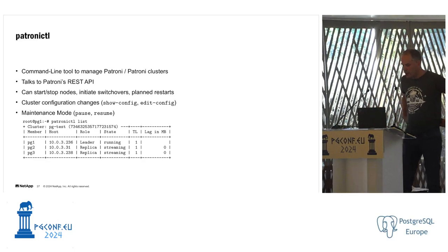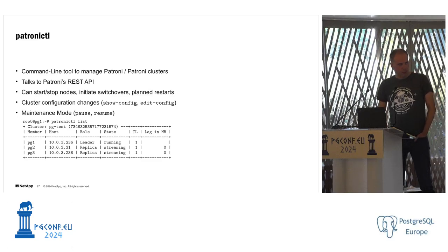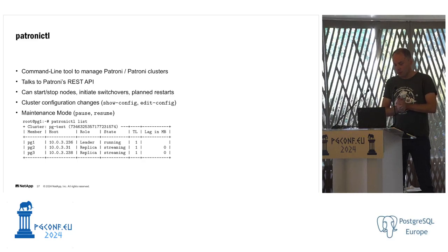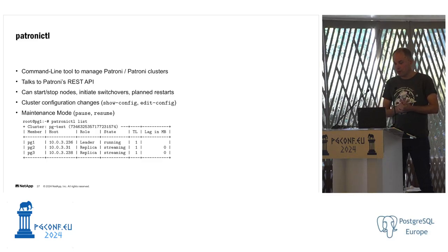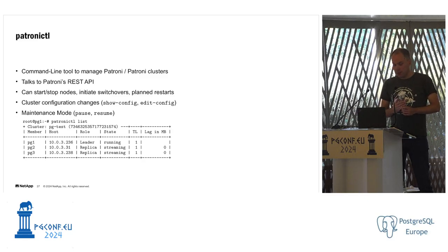Further Patroni features: the Patroni control CLI talks to the REST API. You can use it to initiate switchovers, do planned restarts for minor version upgrades, change dynamic cluster configuration (replicated to all nodes so you only do it once), put the cluster into maintenance mode (pause/resume), and use the 'list' command which shows cluster members, IP addresses, roles, streaming status, timeline, and replication lag in megabytes — updated every HA loop.